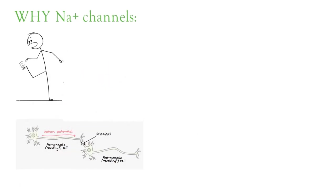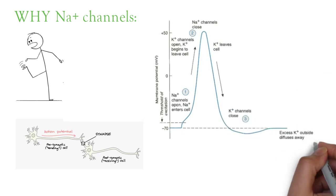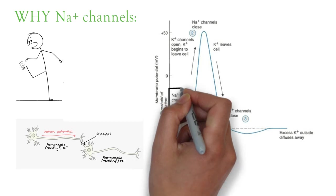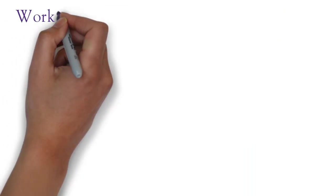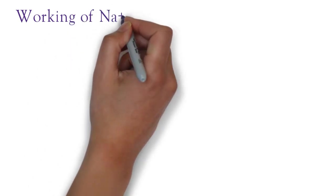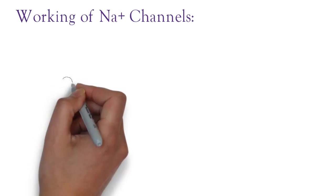There are various phases in the action potential: starting with depolarization caused by the entry of sodium ions through sodium channels, followed by opening of potassium channels leading to repolarization, then hyperpolarization. This action potential is initiated by the entry of sodium ions, which is why we study sodium channels.